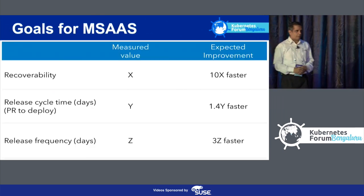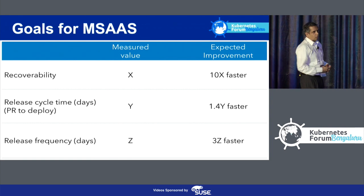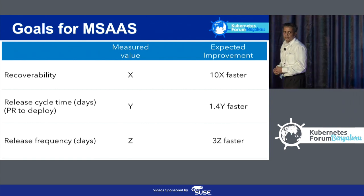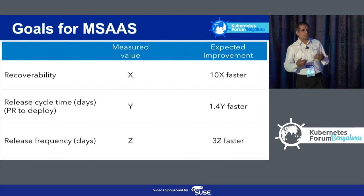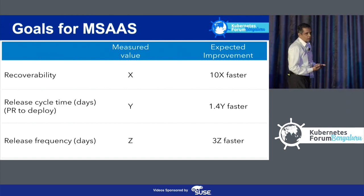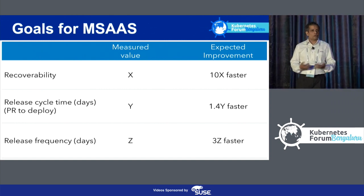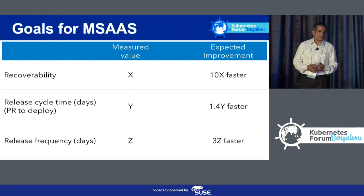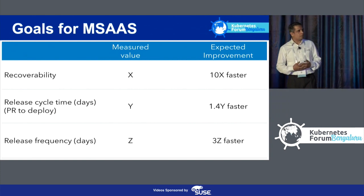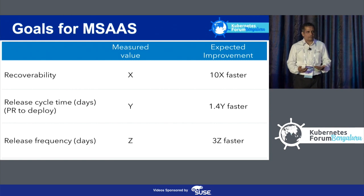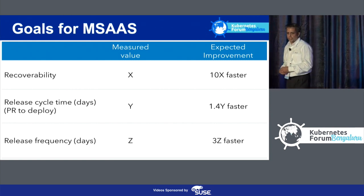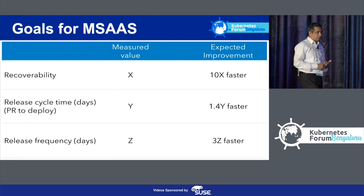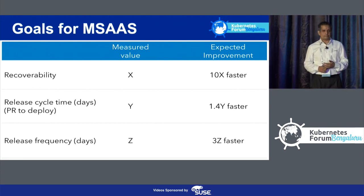Coming back to the main topic on modern SaaS — why we started building this platform. Since we have around 42 million customers, recoverability was something we always wanted to improve. You will end up having some incidents, but it's about how quickly you can recover. We wanted to improve that number by 10 times. That was one of the goals when we started working on this platform.